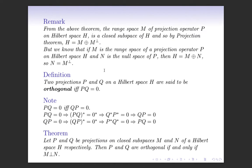Now we have a definition. Two projections P and Q on a Hilbert space H are said to be orthogonal if and only if PQ equals the null operator (the zero operator). That is, two orthogonal projection operators P and Q on Hilbert space H are orthogonal to each other if their product is the null operator.